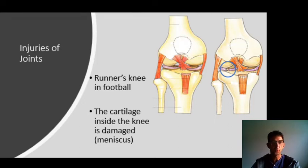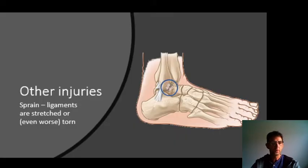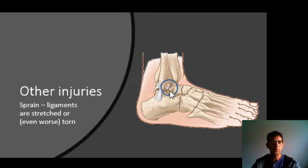Sometimes the ligaments in the knee can also be torn. Other injuries include sprains. When you sprain your ankle, you stretch the ligaments, or even worse, when you tear them, you end up in a plastic cast for a couple of weeks, and that might take a while.